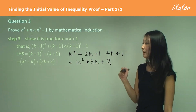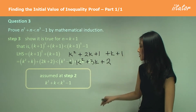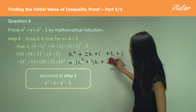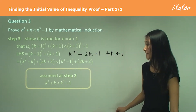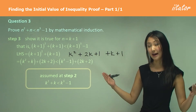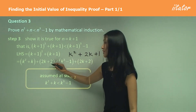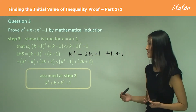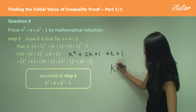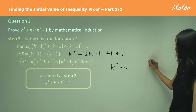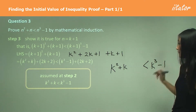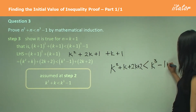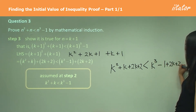Now thinking back to our assumption — we assumed k squared plus k — that's why we separate k squared plus 3k plus 2 into k squared plus k, and then 2k plus 2. I want to use that assumption. Remember how we use the assumption: from Step 2 we know that k squared plus k is less than k cubed minus 1. Now if I add 2k plus 2 to the left side, I must also add 2k plus 2 to the right side as well — always balancing.